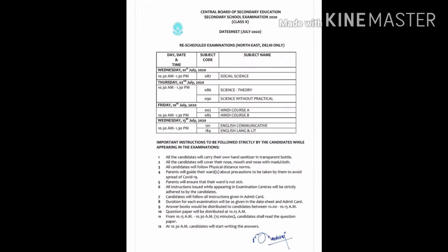First exam on July 1st, Wednesday: Subject Code 087 Social Science. Next exam on July 2nd, Thursday: Subject Code 086 Science Theory, Subject Code 090 Science Without Practical. Next exam date July 10th, Friday.